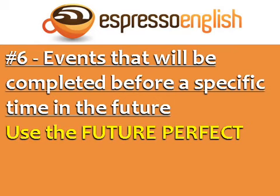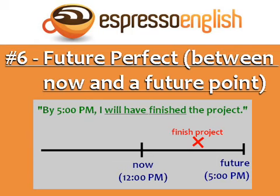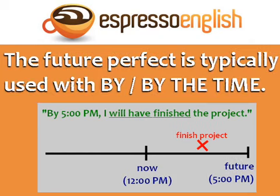Finally, we have events that will be completed before a specific time in the future. In this case, use the future perfect. Imagine that right now it's twelve o'clock p.m. and I need to finish a project before five o'clock p.m. I can say 'by five p.m., I will have finished the project,' because the completion of the project comes between now and five o'clock. The future perfect is typically used with 'by' and 'by the time.'